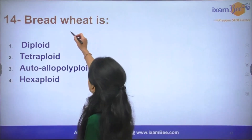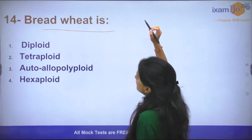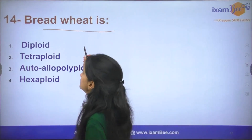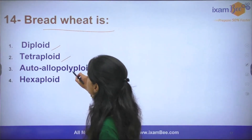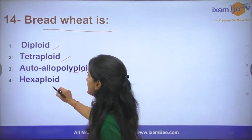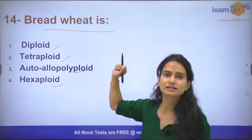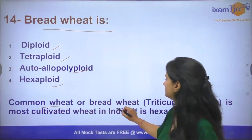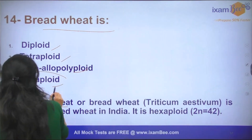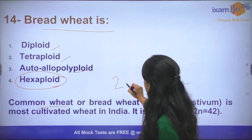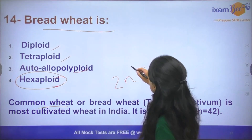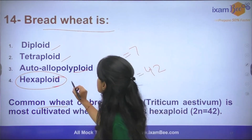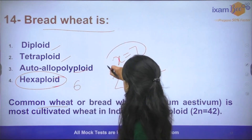Question number 14: Bread wheat — what is its ploidy level? The options are diploid, tetraploid, autoalloploid, and hexaploid. Bread wheat is basically Triticum aestivum. The common wheat or bread wheat is hexaploid with 2n = 42. The base chromosome number is 7, and since this is hexaploid, we have 6 sets of base chromosomes.